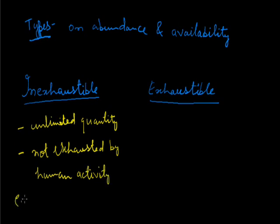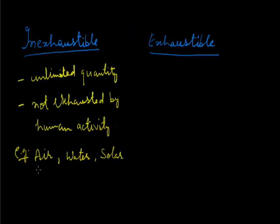Some of the examples are air, water, and solar radiation. We can understand air, water, and solar radiation are present in excess unlimited quantity, so these cannot be exhausted.